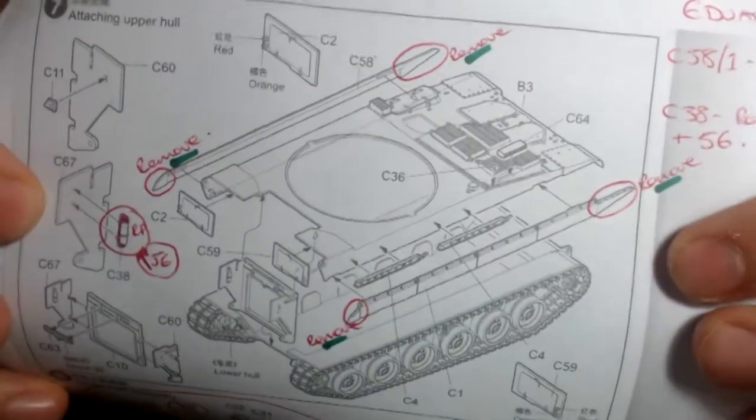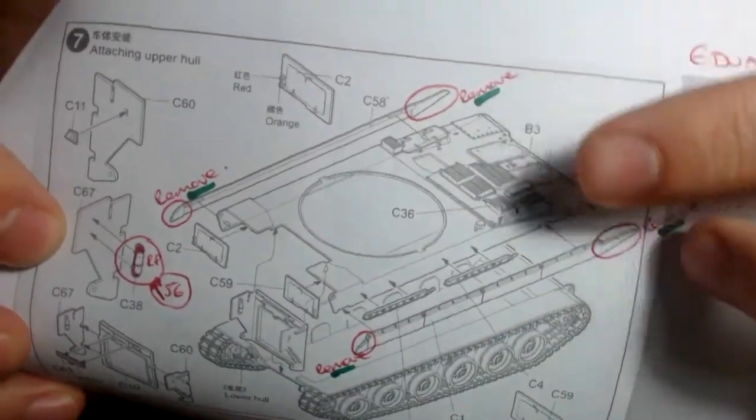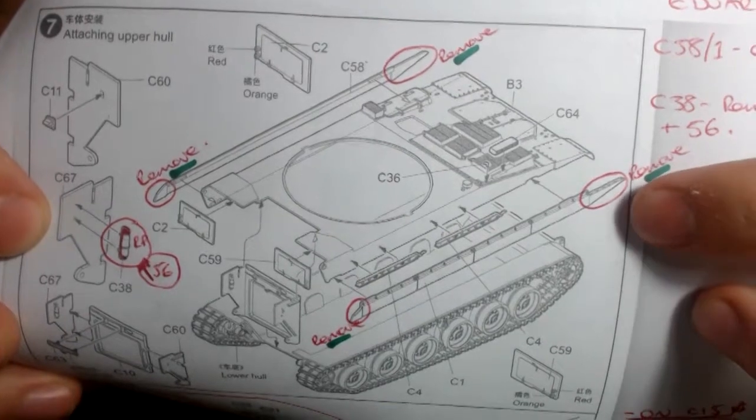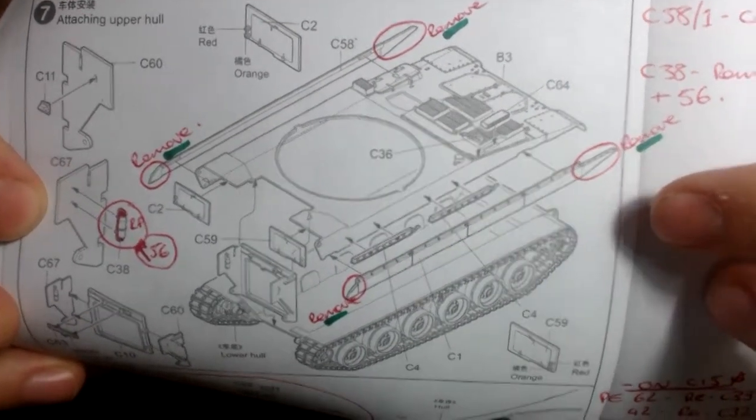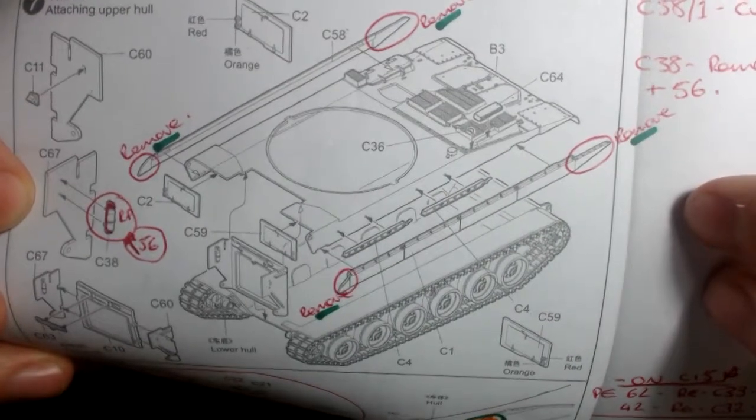If we look at this, you'll see that up here we've got pieces that need to be removed. I wrote 'removed' by them and gave them a good circle. I believe these will assist in putting on the photo-etch mud flaps.